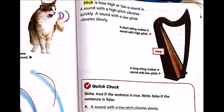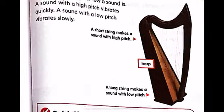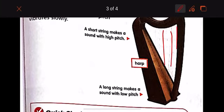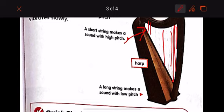Pitch — the word pitch means how high or low a sound is. It is different from loud and soft. A sound with a high pitch vibrates quickly; a sound with a low pitch vibrates slowly. This harp has strings — some strings are long, some are short. The short string makes a sound with a high pitch.